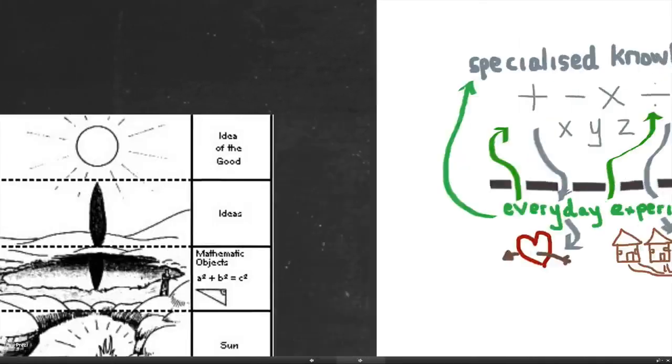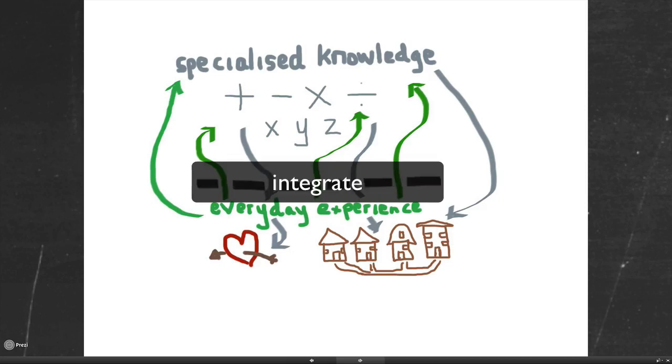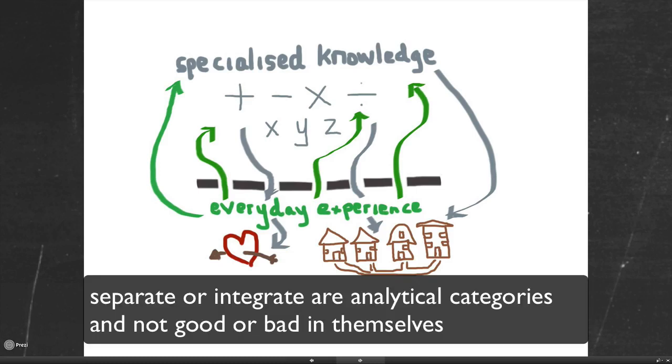On the other side, you have an open relationship between the everyday and specialized where you integrate local knowledge within specialized knowledge. Now, don't think at this stage that one of these is better than the other. These are analytical categories. At certain stages, it's good to separate. At other stages, it's good to integrate.